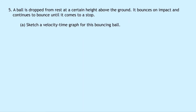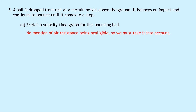Question 5 says that a ball is dropped from rest at a certain height above the ground. It bounces on impact and continues to bounce until it comes to a stop. Part A asks us to sketch a velocity time graph for this bouncing ball. There's no mention of air resistance being negligible, so we must take it into account — meaning the ball will lose energy after each successive bounce and eventually come to a stop. We need to choose our sign convention: upwards to be positive and downwards to be negative.